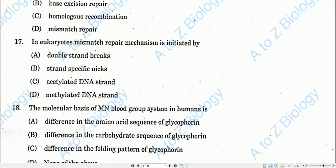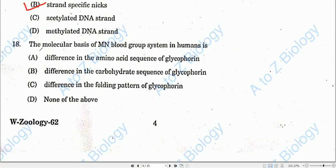Question number seventeen: In eukaryotes, the mismatch repair mechanism is initiated by strand-specific nicks. Some nicks are formed in eukaryotes for mismatch repair, so option B — strand-specific nick — will be the correct one.